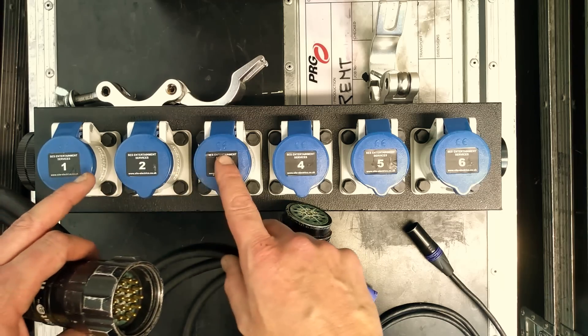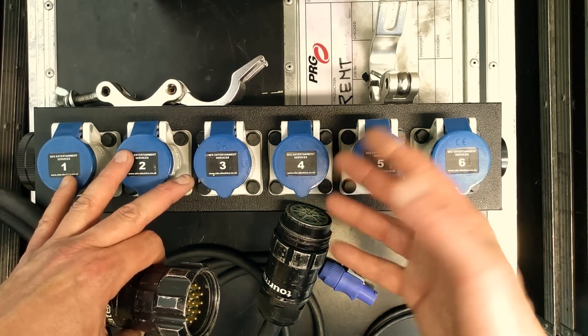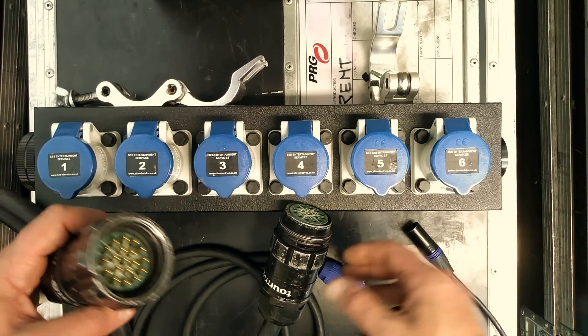And the reason for six is that we've got three phases, and it was convenient to have a dimmer rack with phase one, two, and three, and then one, two, and three again. And it meant the most handy multiple of the three phases was probably six. So that's why they chose it.